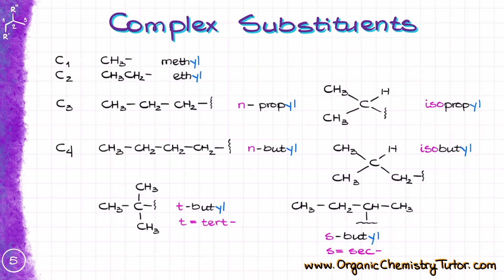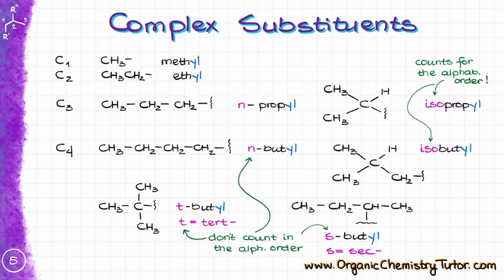If we have anything beyond four carbons — like C5, C6, etc. — we have to use complex nomenclature, which goes beyond the scope of this video. Also, the prefix iso is counted towards alphabetization, while the prefixes tert and sec are not counted. So for alphabetical order, the isopropyl group starts with I, while the tert-butyl group starts with B, because the tert part doesn't count. I know there is a lot of memorization here, but learning nomenclature is like learning a different language — you gotta memorize the vocabulary.